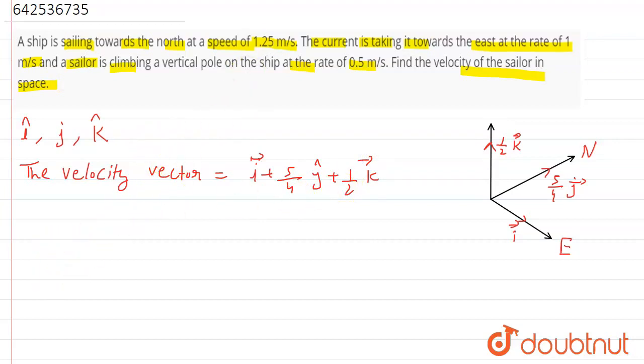So, the velocity vector is equal to i vector plus 5/4 j vector plus 1/2 k vector.